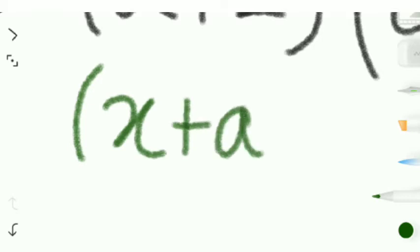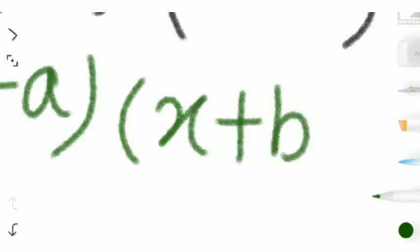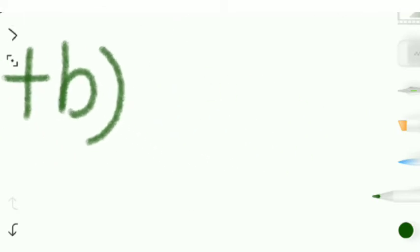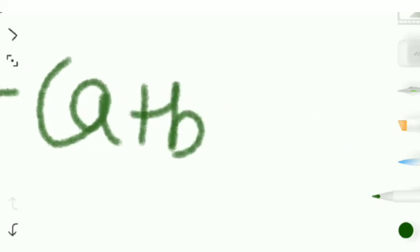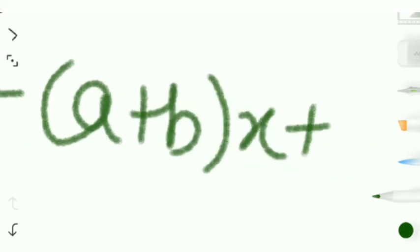First of all we'll write the formula, the expansion formula that we're going to use is (x+a) multiplied by (x+b) equals x squared plus (a+b)x plus ab.